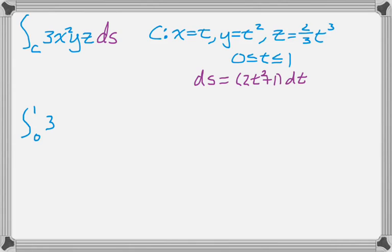So we get 3, and then x is equal to t, so it's going to be t squared. And then y is equal to t squared, so t squared. And then z is equal to 2 thirds t cubed, so substitute that in. So we substitute all that, and then for ds, we substitute this.